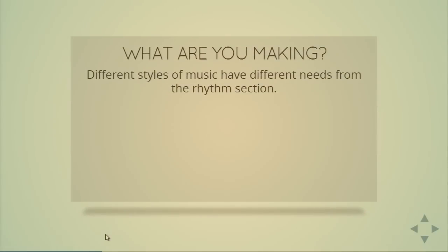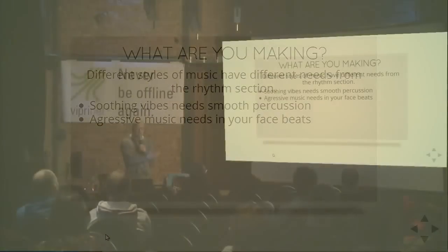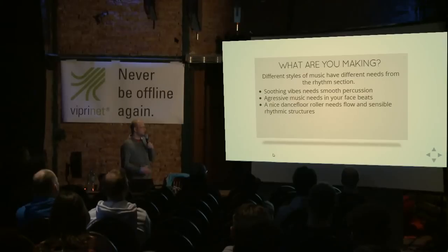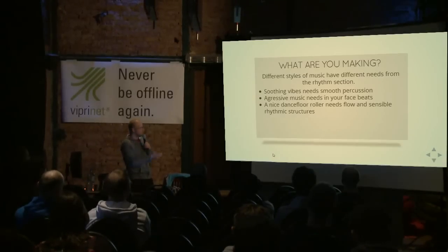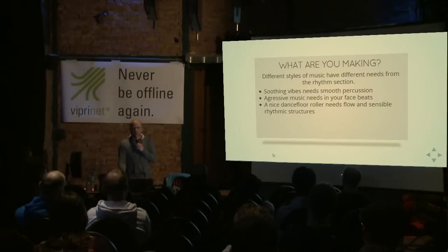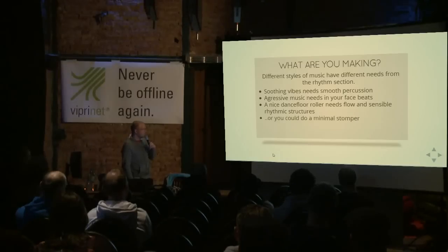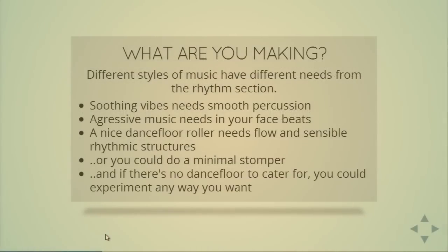So what are you making? If you're making something nice and smooth, you don't pick a break that's big and brash. If you're making something aggressive, you pick something big and brash and put the beats in the face of your listener. If you do a nice dancefloor roller — a track that just rolls on steadily for people to dance to — you'll pick something with nice groove, flow, and sensible rhythmic structures. Most people, with the exception of breakcore fans, would not like to be dancing to 32nd-note complexity. Or you could do a minimal stomp and find something like Impeach the President — basically a hi-hat, kick, and snare — and just amp them up.